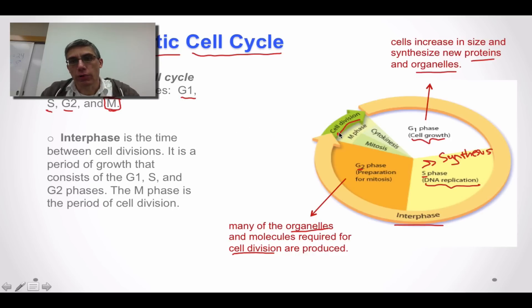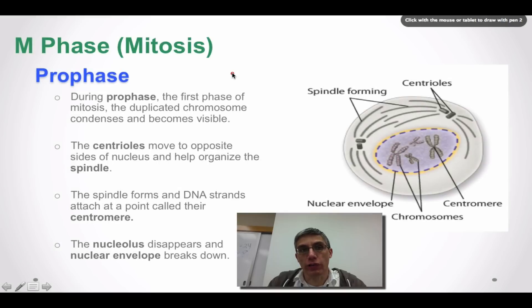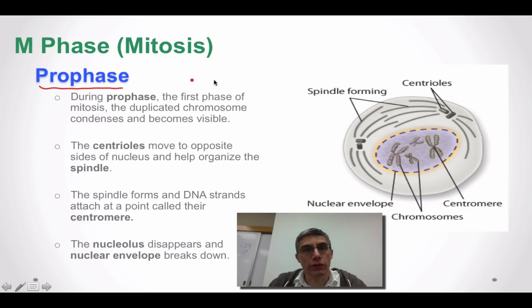We're going to talk primarily about cell division and look at the two parts of the M phase. We're going to look at cytokinesis, which is the division of the cytoplasm, and mitosis, which is the part of cell division that actually involves the division of the nucleus. The very first phase found in the M phase or mitosis is called prophase.